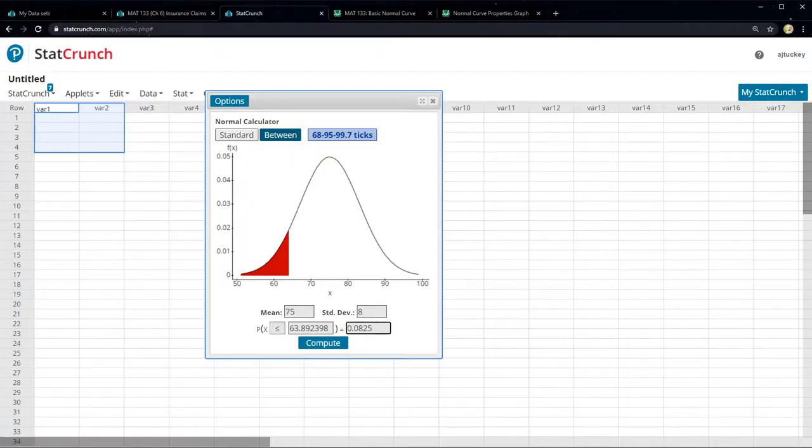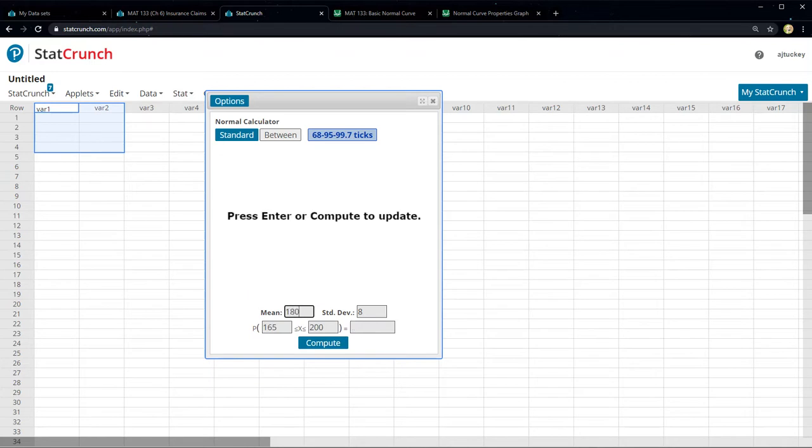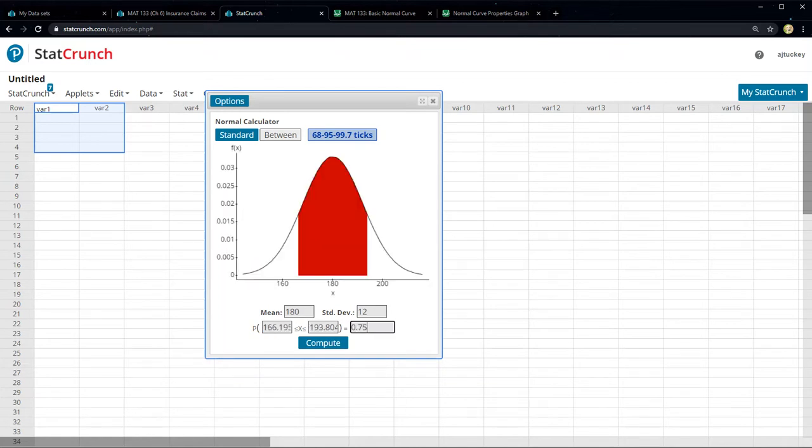Now, this is easy in StatCrunch and it's easy in newer calculators. In StatCrunch, you just click between, tell it that the middle is 180, standard deviation is 12, and then you go over here and tell it 0.75, enter, and it'll find the two values. 166.1958, 193.80. Done.